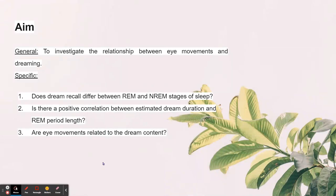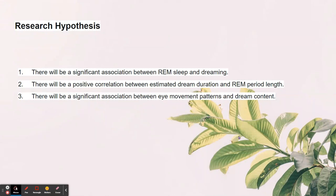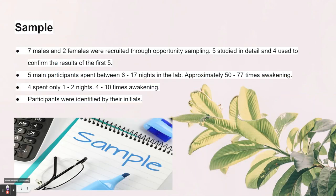The general aim was to investigate the relationship between eye movement and dreaming. The specific aims were: does dream recall differ between REM and non-REM stages of sleep? Is there a positive correlation between estimated dream duration and REM period length? And are eye movements related to dream content? The hypotheses stated there will be a significant association between REM sleep and dreaming, a positive correlation between estimated dream duration and REM period length, and a significant association between eye movement and dream content.